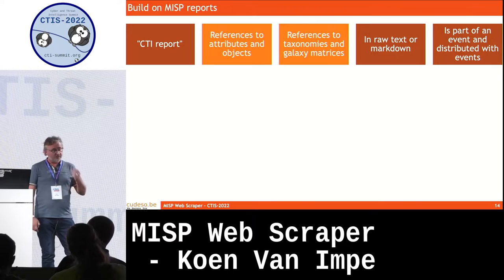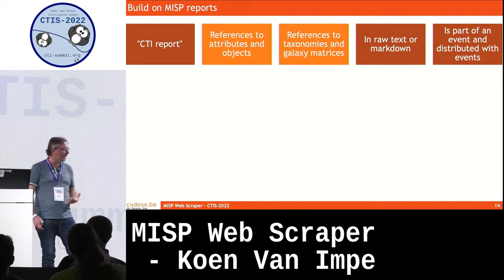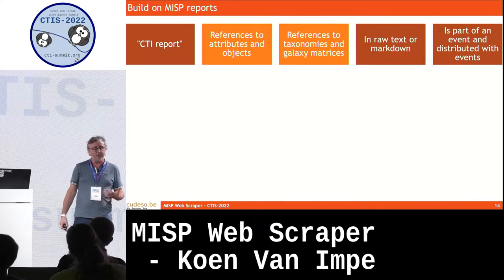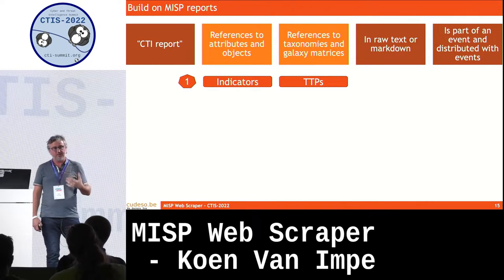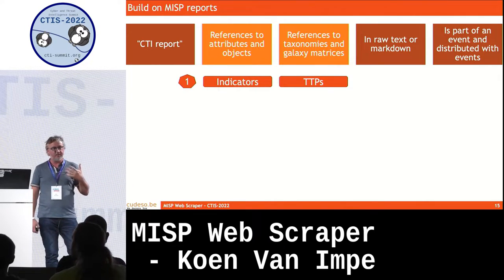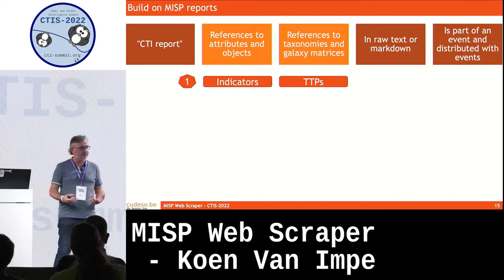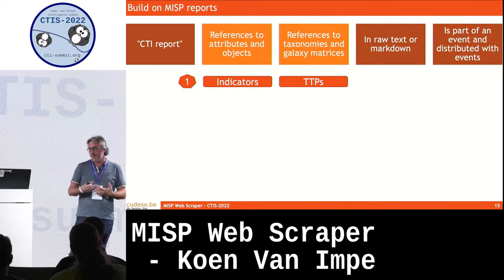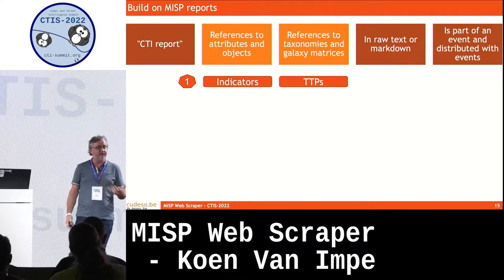One of the features in MISP report also allows you to add references to objects and attributes that exist in your MISP event — not only the objects and attributes, but also the taxonomies and the galaxies. This solves one of my problems: having an easy way to extract indicators and TTPs once I create a MISP report from a crawled website.